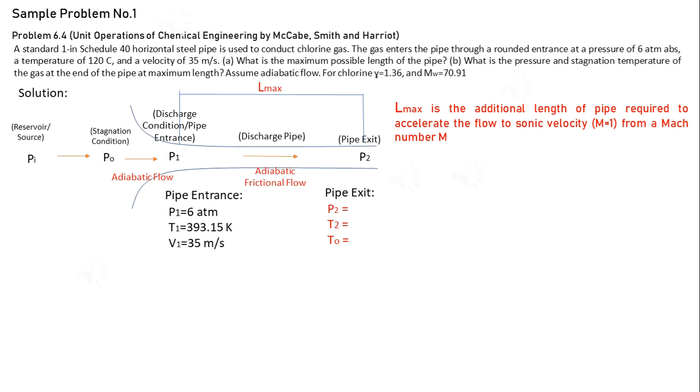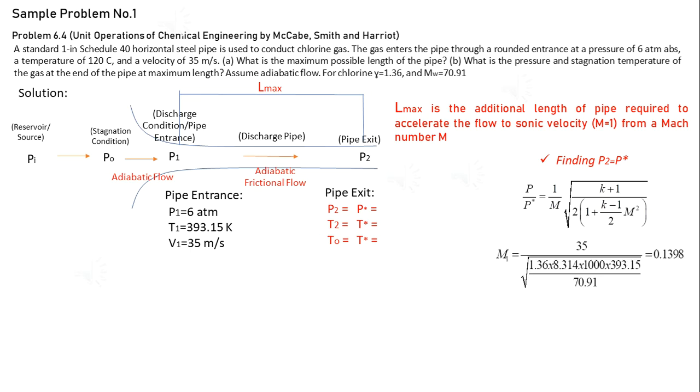At point P2, we have Mach number equals to 1, so conditions are critical, denoted by asterisk conditions. Finding P2 using the equation of adiabatic frictional flow, we have 0.7735 atm.